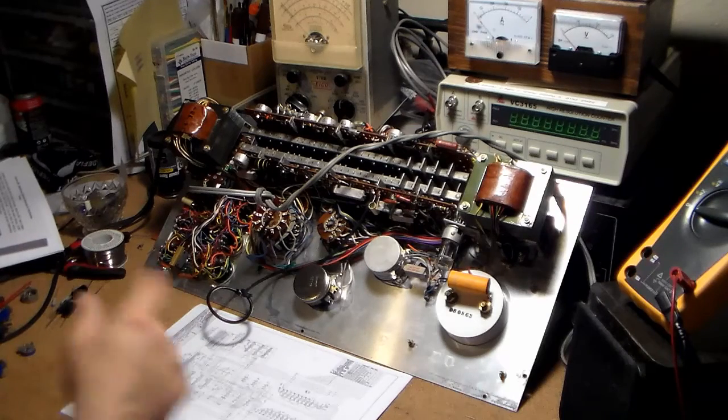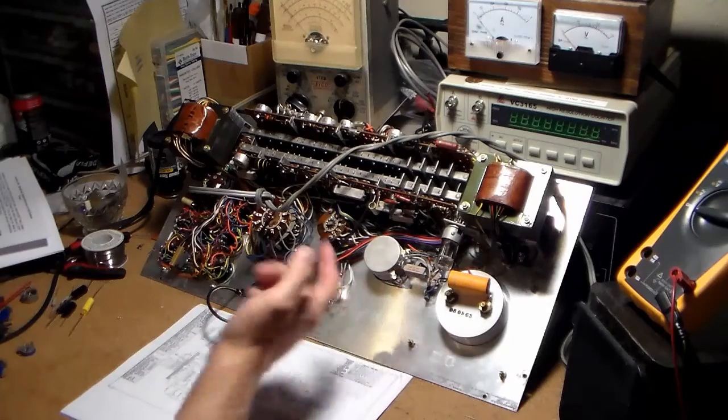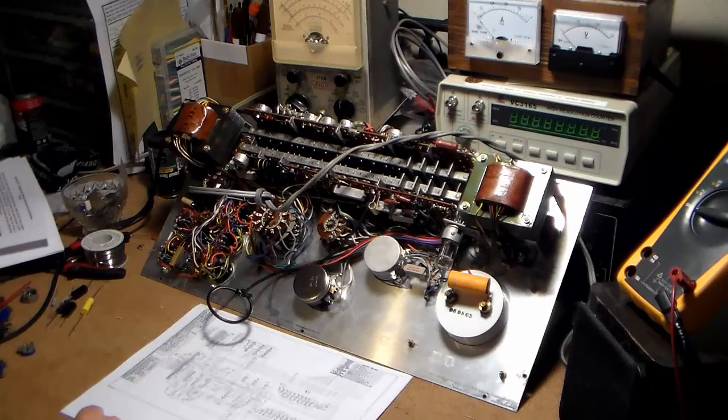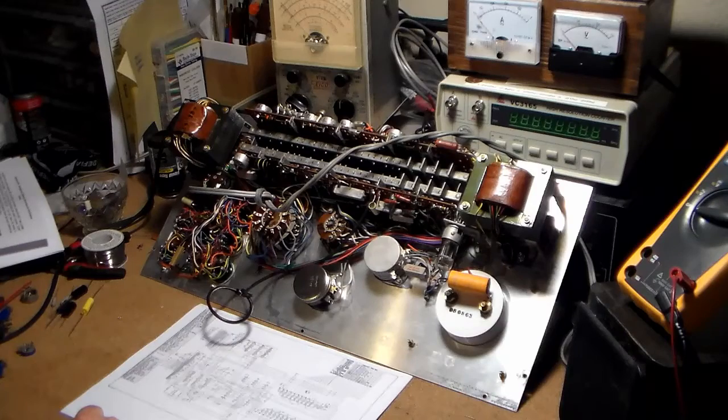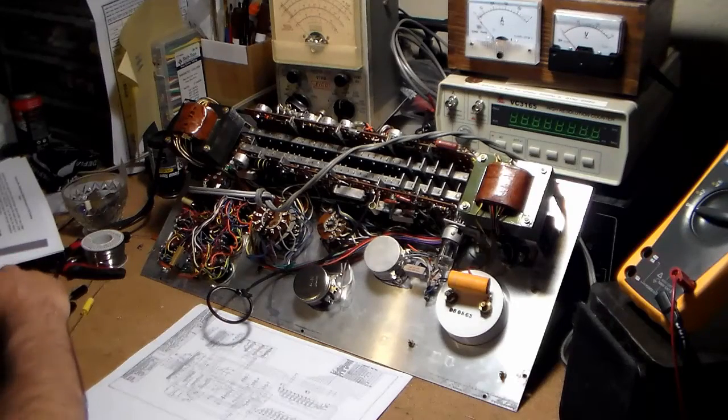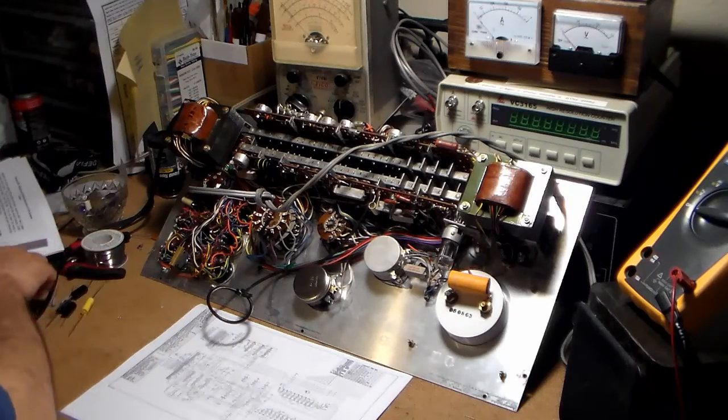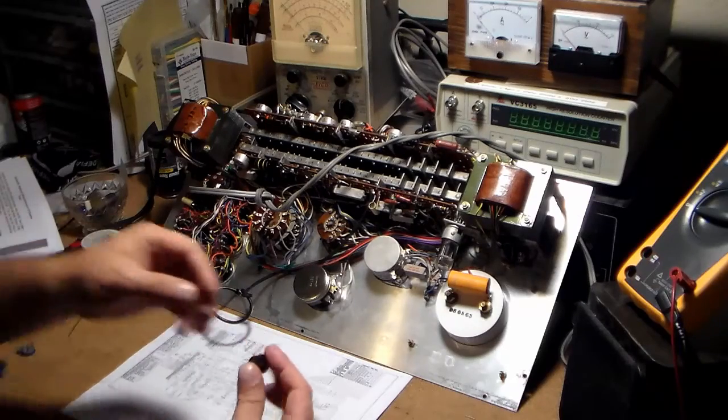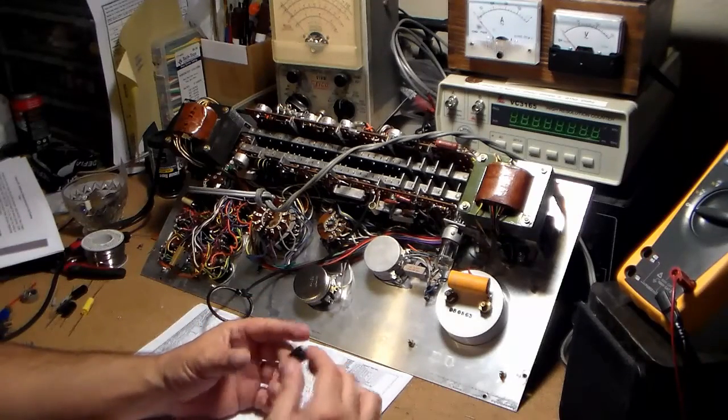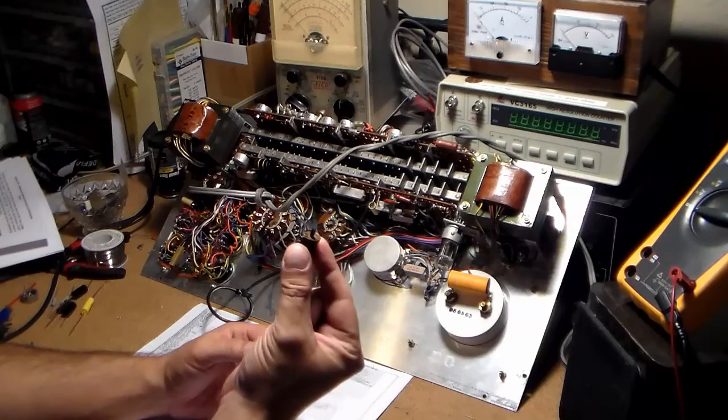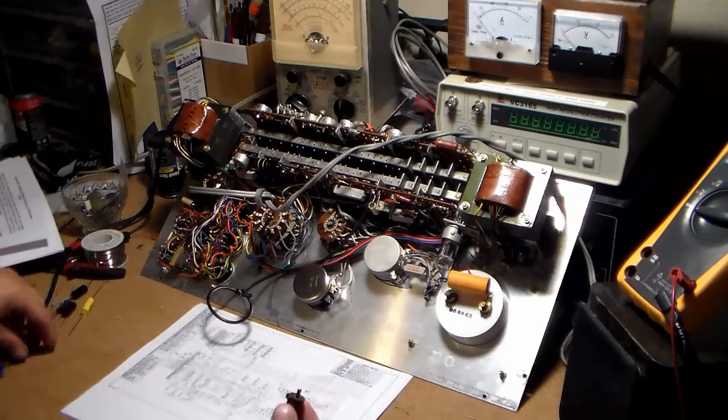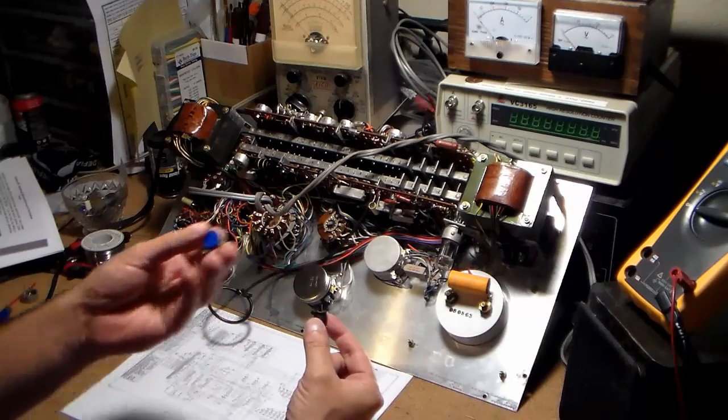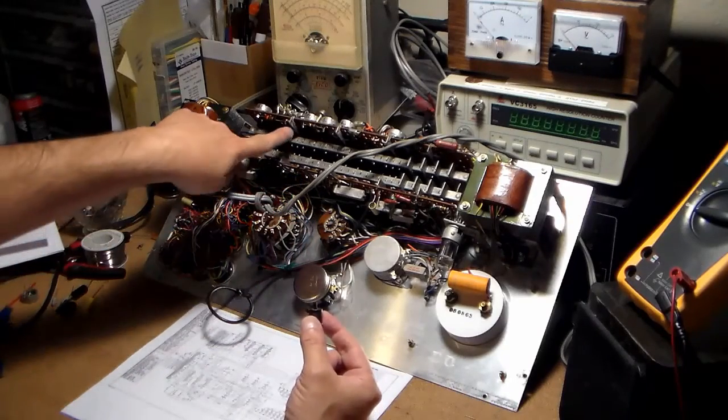So I went ahead and replaced that already, it was an 8 microfarad. So I bought some of these pots, I ended up with these linear pots here, this one's wire wound, it's a 5k and I ended up with these 2.5k's in case I need them.